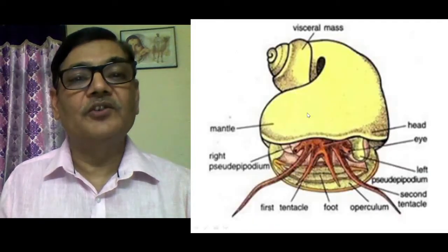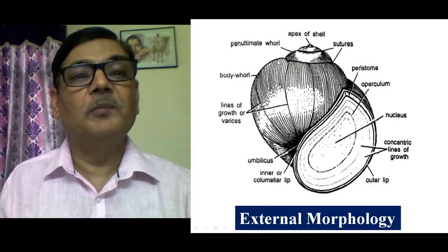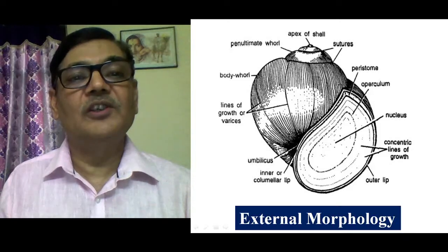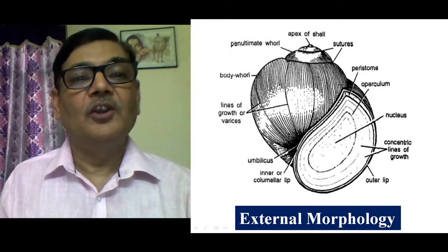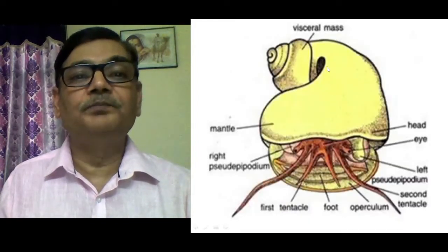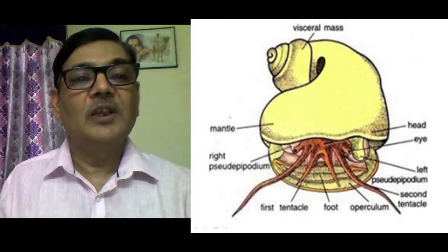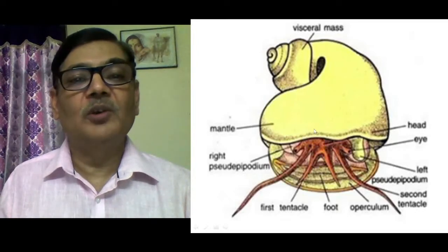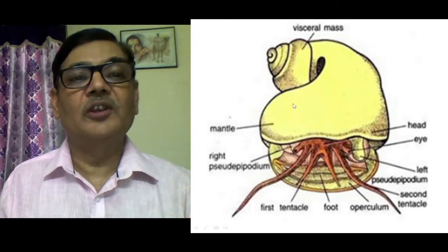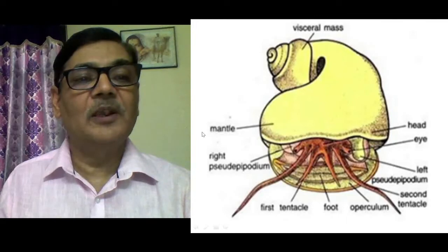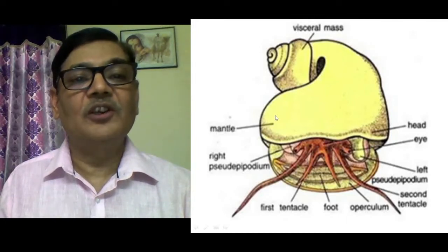Now you have to remove this shell — particularly the portion of the body whorl. This is a hard structure, so by using a scalpel when you break it you can see the inner soft portion of its body. This portion can be seen by removing the shell of the animal, particularly the shell of the body whorl area. You can then see the mantle, which is also called the pallium — a soft integument. Mollusca means soft-bodied animal, so for protection the external shell is present, and it is actually secreted by the mantle itself.